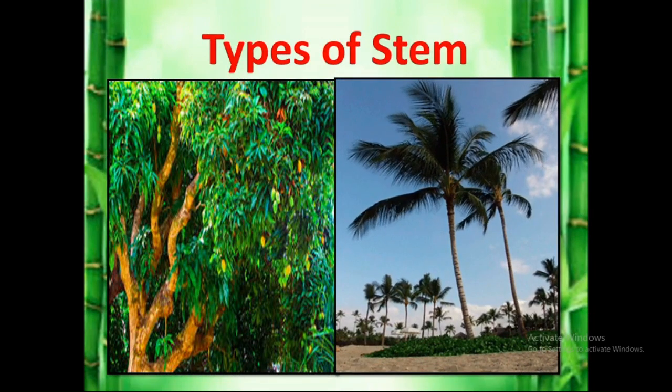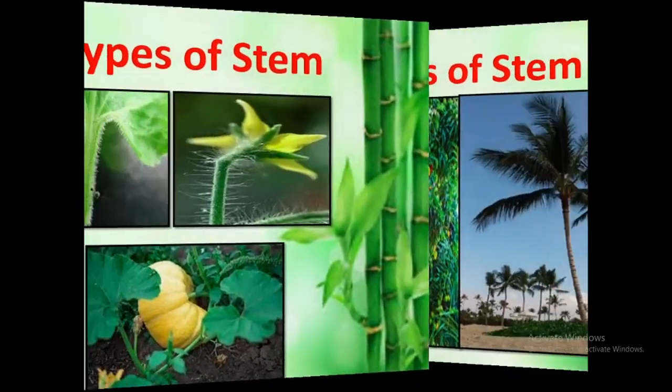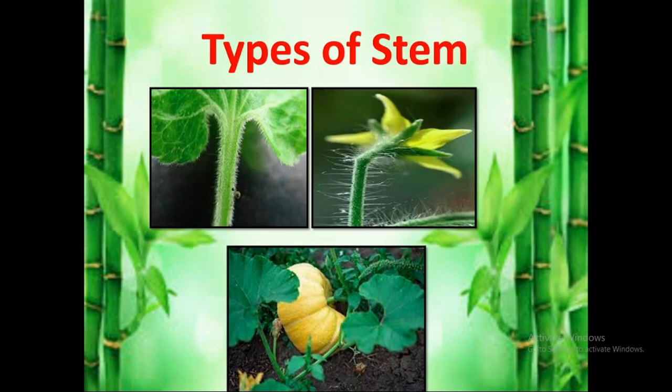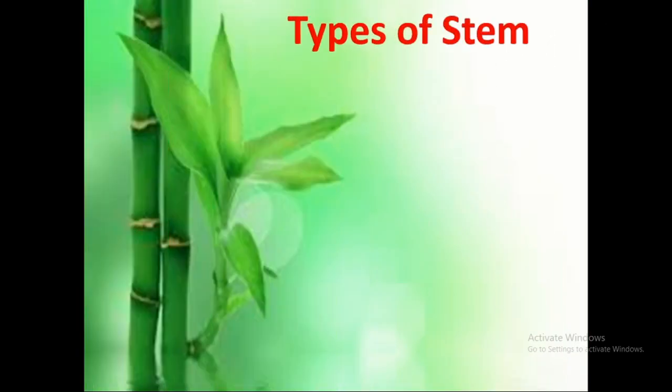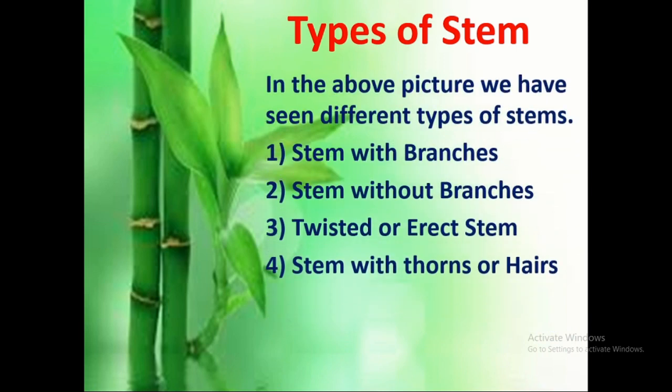Now we are going to learn the types of stem. Some stems are with branches, some stems are without branches, some stems are creeping stems, and some stems have thorns or hairs. So the types are: stem with branches, stem without branches, twisted or climbing stem, and stem with thorns or hairs.